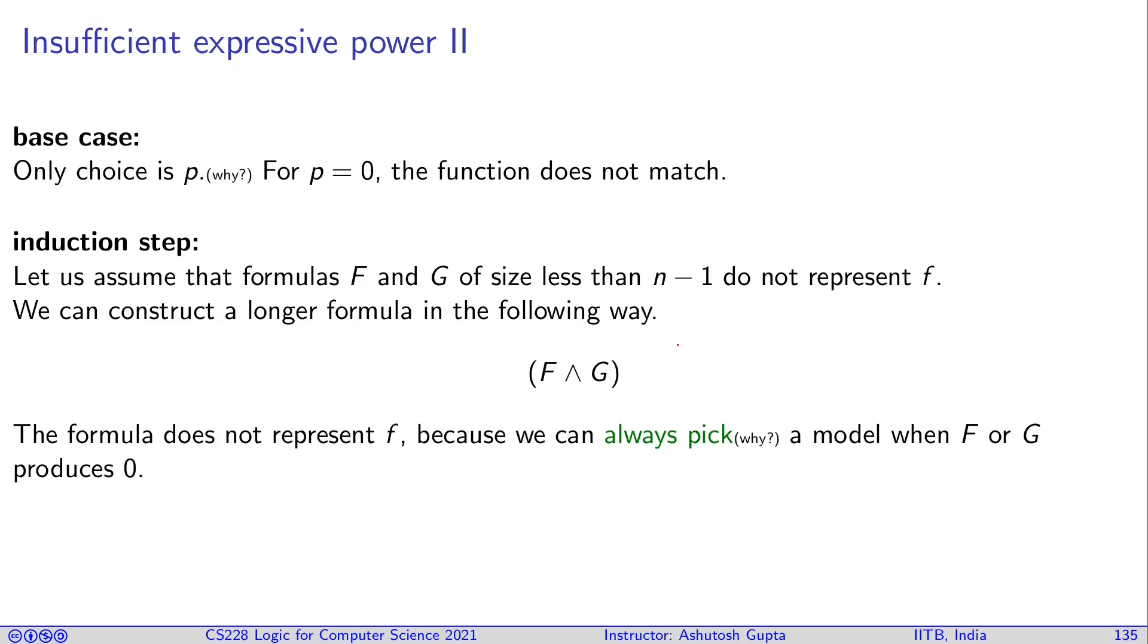You can always pick that. Therefore, you cannot represent the function f by f and g, and therefore there is no way you can represent all truth tables using only conjunction.